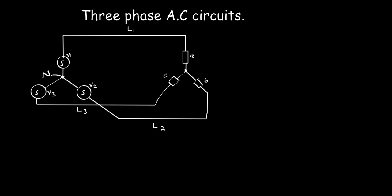To calculate the line voltage we can use this formula: VL equals the square root of 3 multiplied by the phase voltage. The line voltage is the voltage measured between any two transmission lines in this circuit. For example, we have transmission line L1 and transmission line L2.